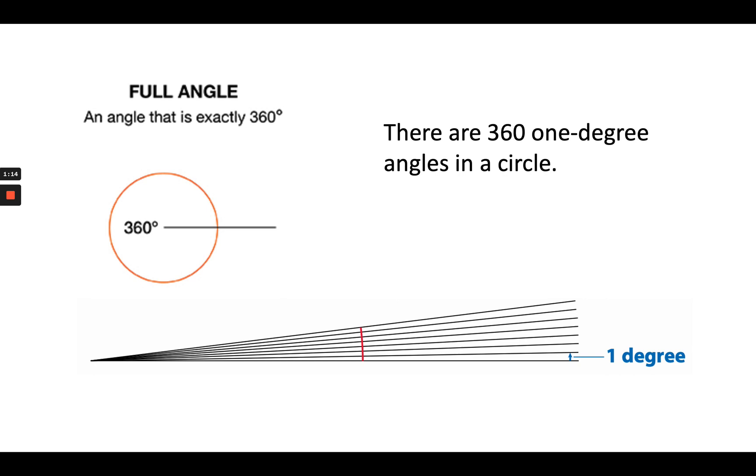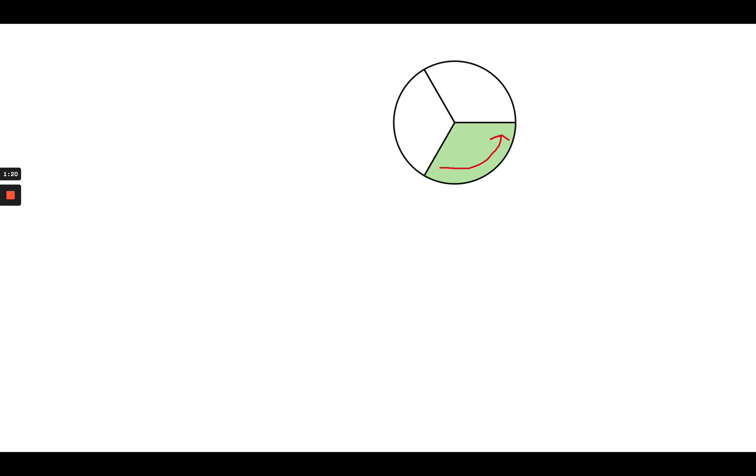So let's take a look at a fraction of a circle and see if we can determine its angle measure. So here we have a circle, and it is broken up into three parts, and one part is shaded. So we have one-third of the circle is shaded. It also shows a turn through one-third of the circle, or one-third of 360 degrees.